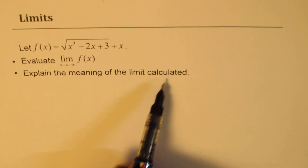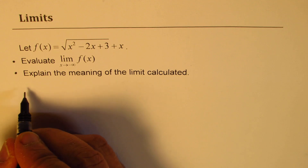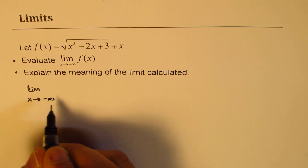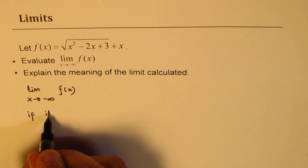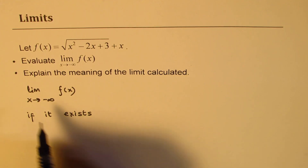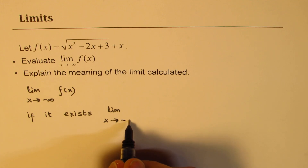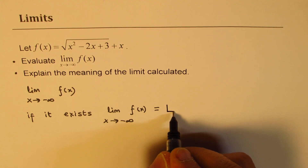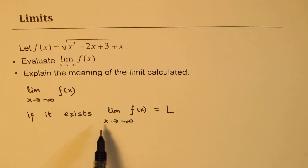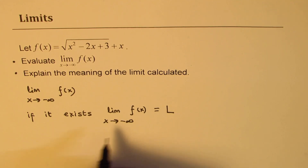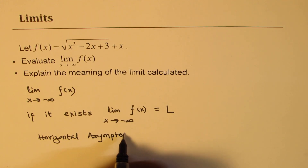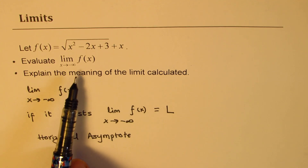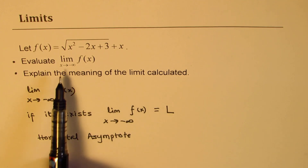Let's begin with understanding the meaning of the limit which we are trying to find. We're trying to find the limit as x approaches minus infinity for the given function. Now this limit may exist or it may not exist — both are possibilities. If it exists, then the limit as x approaches minus infinity for f of x will be some value — let's call it L. It is a value which the function approaches as x approaches minus infinity. That is basically the horizontal asymptote. So if the limit exists, we have actually found the horizontal asymptote for the function as x approaches minus infinity.